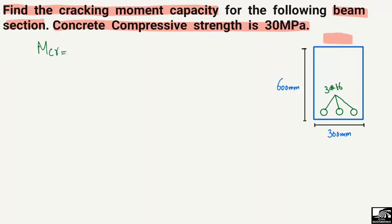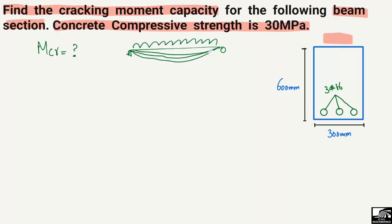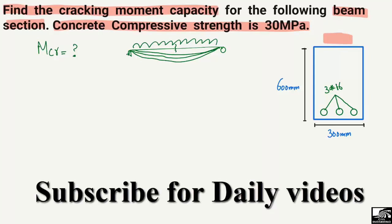If you don't know about cracking moment capacity, it is the capacity of the beam without having the first crack. When a load acts on a beam, it shows deformation and bending moment. As the load increases, the bending moment also increases. The moment resistance of the beam at the point where the first crack occurs is known as the cracking moment capacity.